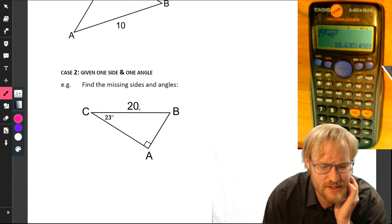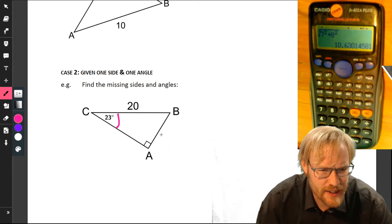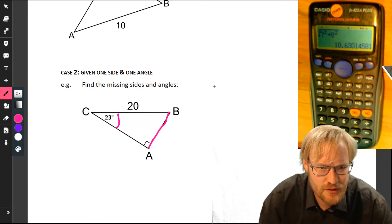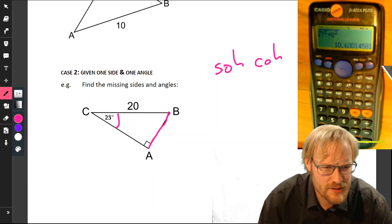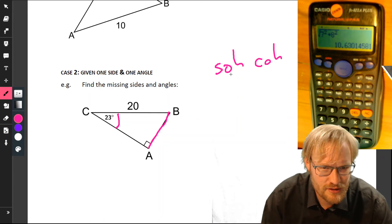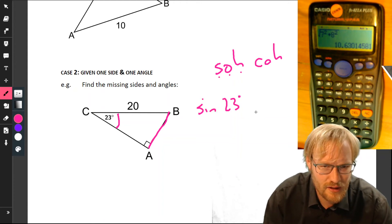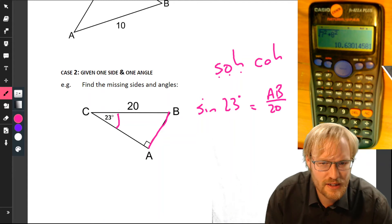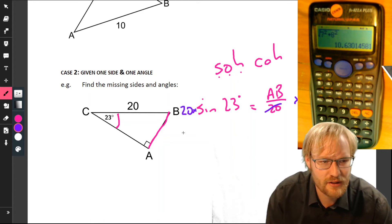We're given this 23 degrees and this 20 here. Let's use something to do with this 23. Let's say we want to find out what AB is—that's going to be our starting point. We've got our SOHCAHTOA ready on hand. From this 23, we've got the opposite that we're trying to find, and we're given the hypotenuse. So opposite over hypotenuse—we must be dealing with sine. So sine of 23 equals the opposite, AB, which we don't know yet, over 20.